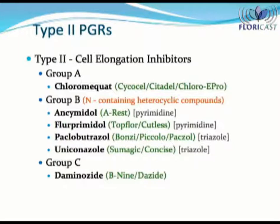The type 2 PGRs are classified into three groups. Group A contains only Chlormequat. Group B are the nitrogen-containing heterocyclic compounds, which include the Pyrimidines — Ancymidol and Flurprimidol — plus the Triazoles of Paclobutrazol and Uniconazole. Group C contains Daminozide. Next, we will see why the three groups are classified in different subcategories.